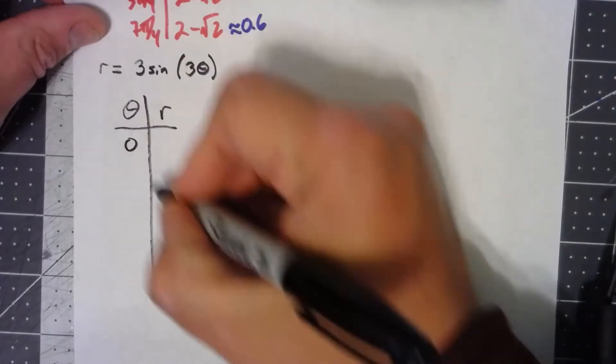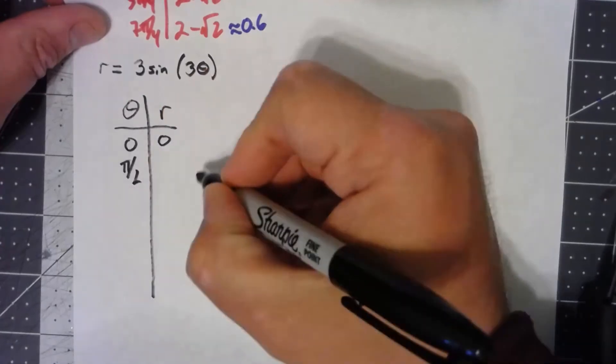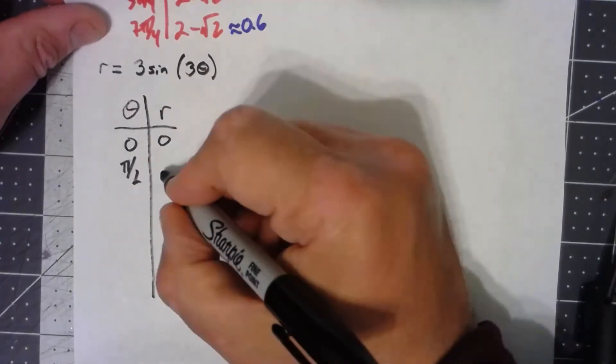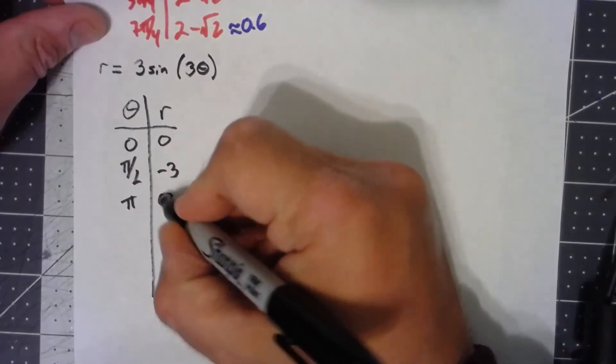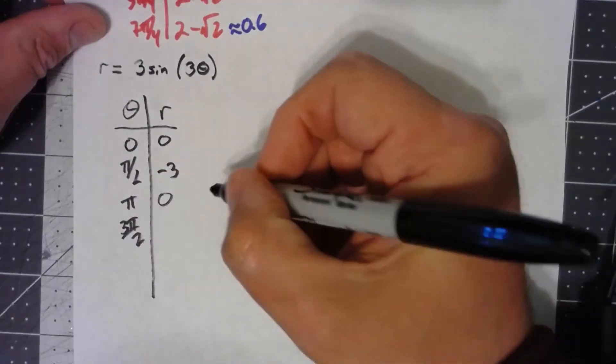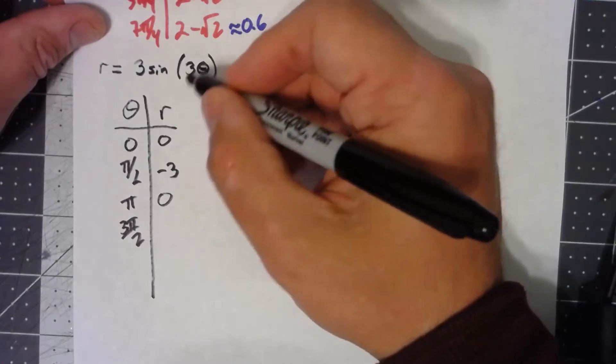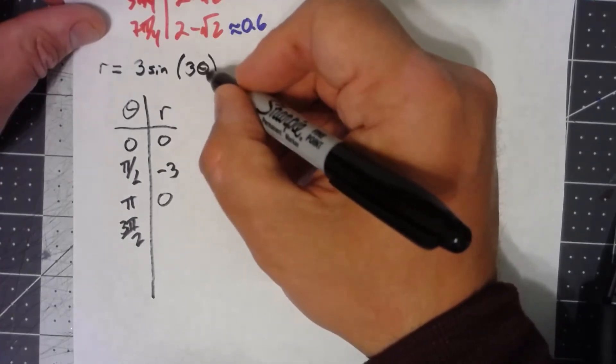At 0, sine of 0 is 0. At pi over 2, the sine of 3 pi over 2 is a negative 1, so that becomes a negative 3. At pi, I get 0. And at 3 pi over 2, I get 9 pi over 2, which is the same thing as pi over 2, which would be 3.